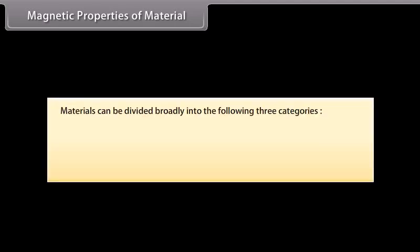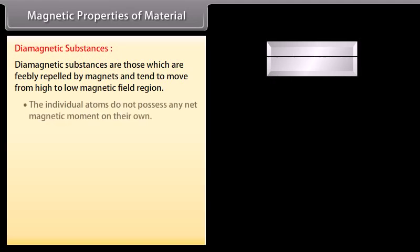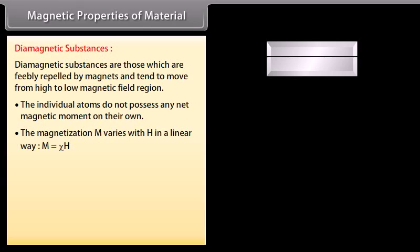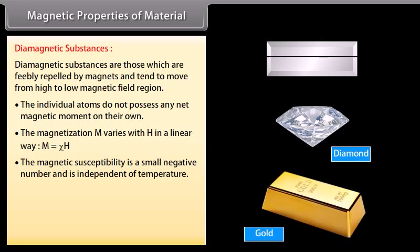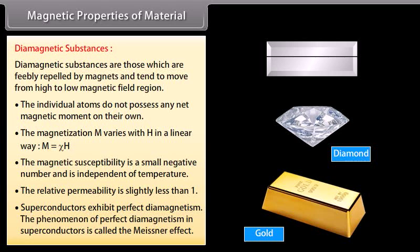Materials can be broadly divided into three categories. Diamagnetic substances are feebly repelled by magnets and tend to move from high to low magnetic field regions. Individual atoms do not possess any net magnetic moment. Magnetization M varies linearly with H: M = χH. The magnetic susceptibility is a small negative number independent of temperature, and relative permeability is slightly less than 1. Superconductors exhibit perfect diamagnetism — this phenomenon is called the Meissner effect.